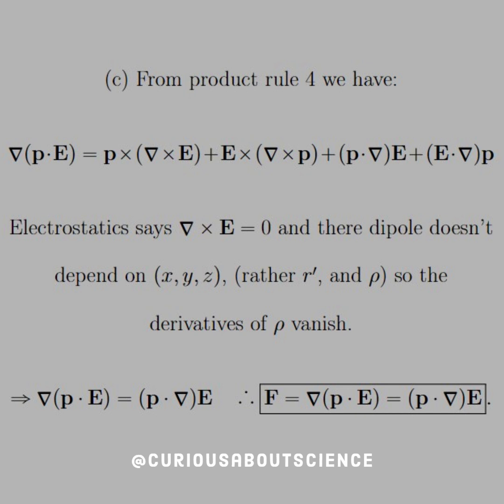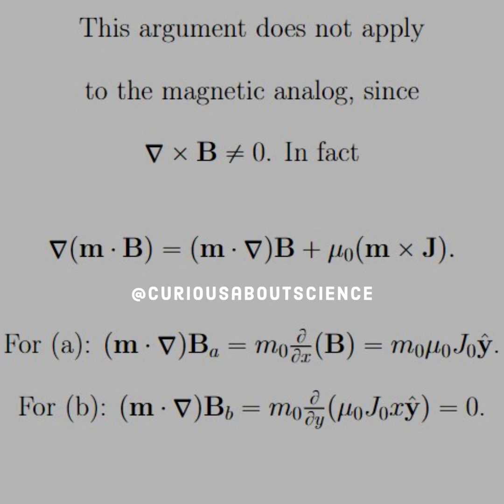Furthermore, now the argument does not apply to the magnetic analog since the curl of B does not equal zero. So if that was our hinging argument for the electrostatic case, that cannot be used here. And in fact, we say that the gradient of M·B is equal to M·∇×B plus μ₀(M×J).